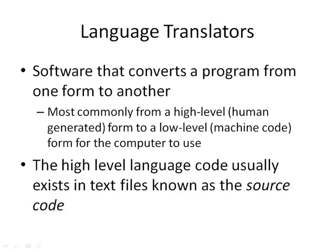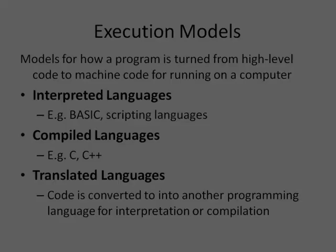When writing in a high-level programming language, we require some kind of language translator — a piece of software that is itself a program. It converts an input program from one form to another, for example taking a high-level programming language program written by a person into low-level machine code ready for the computer. The high-level language code usually exists in text files known as source code, and the translator converts that source code into machine code ready to run.